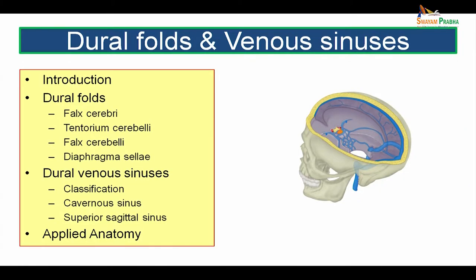We will be dealing with dural folds and venous sinuses under these headings: introduction, dural folds — studying all four: the falx cerebri, tentorium cerebelli, falx cerebelli, and diaphragma sellae. Then we will go on to the dural venous sinuses, their classification, details of the cavernous sinus, superior sagittal sinus, and all other sinuses, and finally applied anatomy.